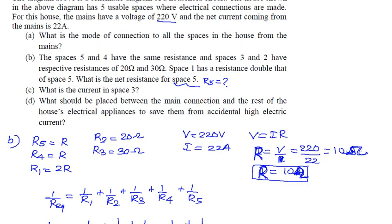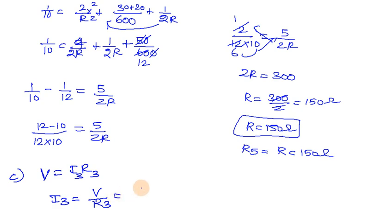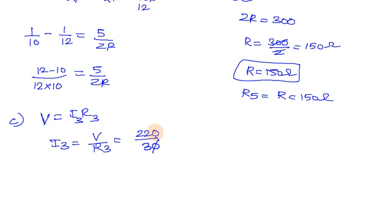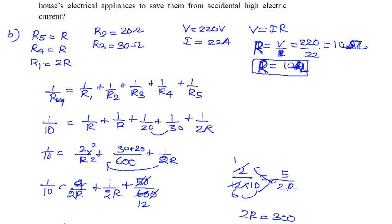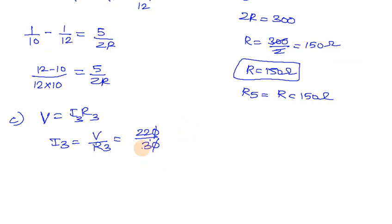Question C: What is the current in space 3? Since this is a parallel connection, the voltage across each space is constant. So I3 equals V divided by R3, which is 220 divided by 30, giving approximately 7.33 amperes.